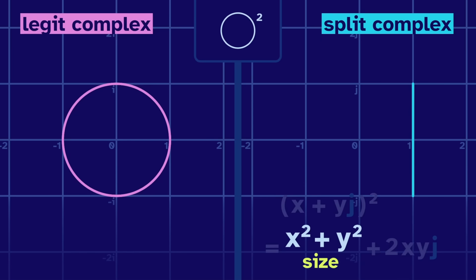This is the size from the legit complex numbers. Since the input is a circle, all points have size 1, so the output is fixed at 1 in the real axis. It only varies in the uppy-downy axis, therefore a straight line.